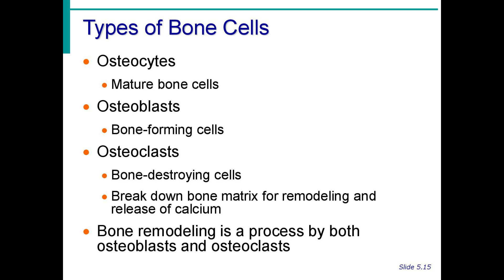We have three types of bone cells: osteocytes, osteoblasts, and osteoclasts. Osteocytes are mature bone cells situated in the lacunae — they are sometimes latent or inactive. Osteoblasts are bone-forming cells — a helpful memory tip is the letter 'B' for 'baby,' meaning they are still young forming cells. Osteoclasts are bone-destroying cells that break down bone for remodeling and release calcium whenever blood calcium levels are depleted.